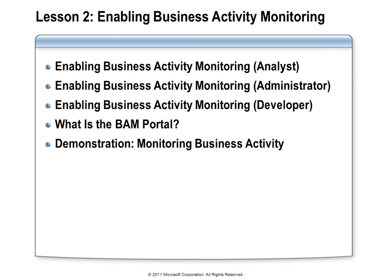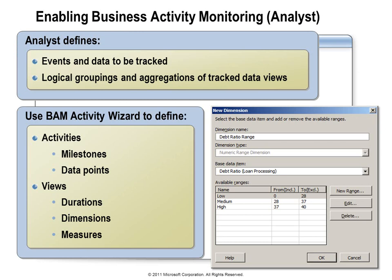We'll talk about what's available in the BAM portal, and then close with a demonstration. Any data that will be collected or reported by BAM first needs to be specified up front in a document known as a BAM definition, and the best way to create a BAM definition is to use the Excel add-in. The add-in provides a wizard that walks you through the process. The first step is to define one or more BAM activities — a BAM activity defines a collection of data values that provide enough information to summarize the history of an instance of a business process. Those could be date-time values representing milestones, or text or numerical values such as an order ID or product IDs.